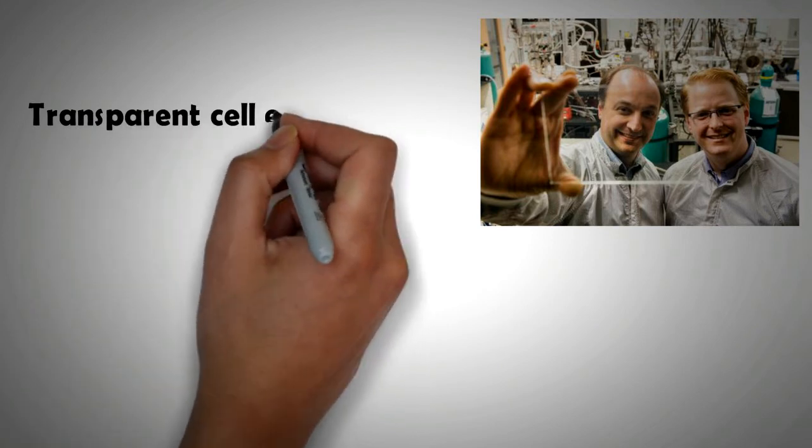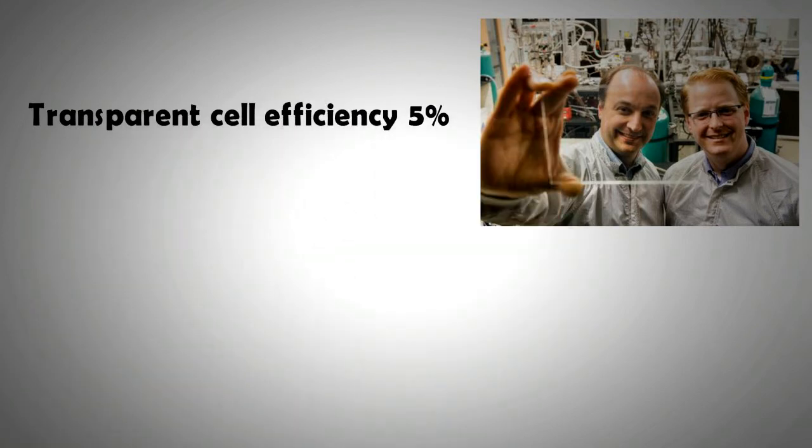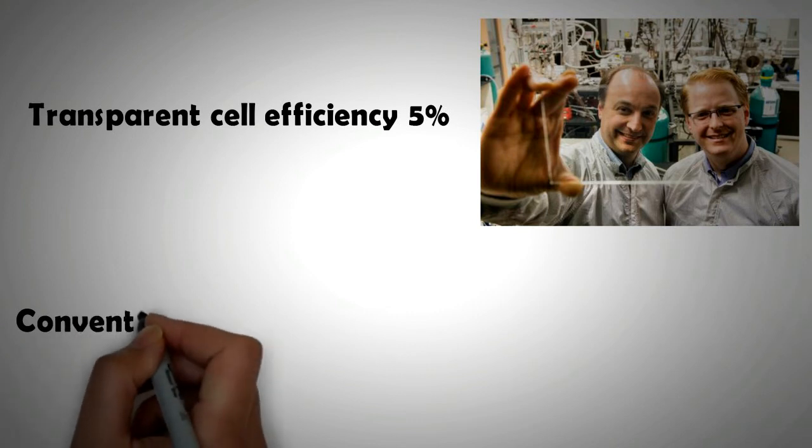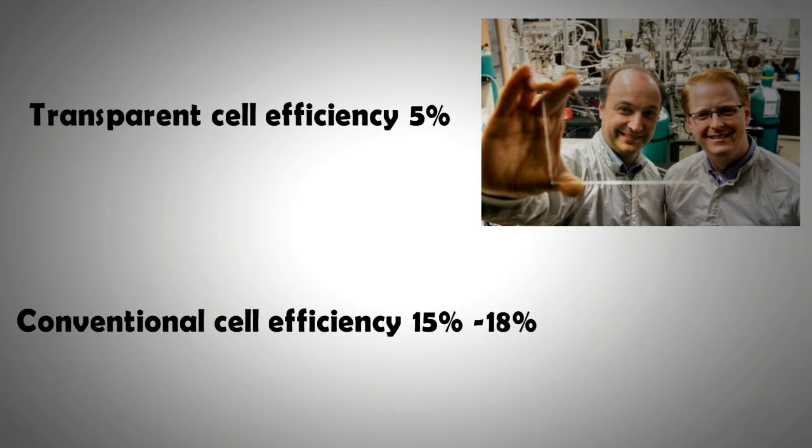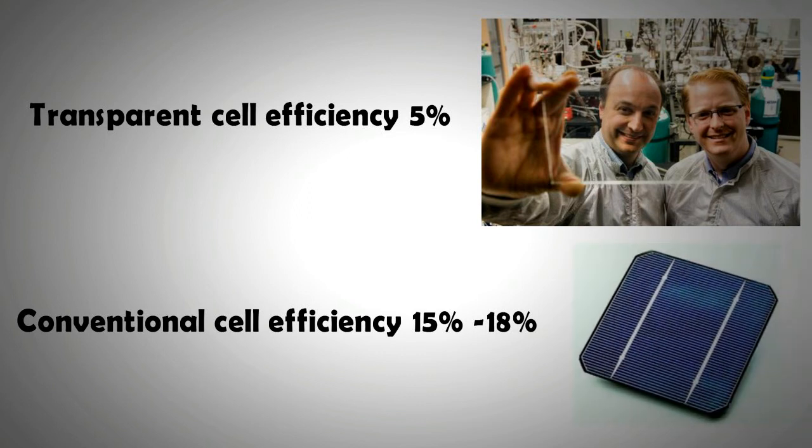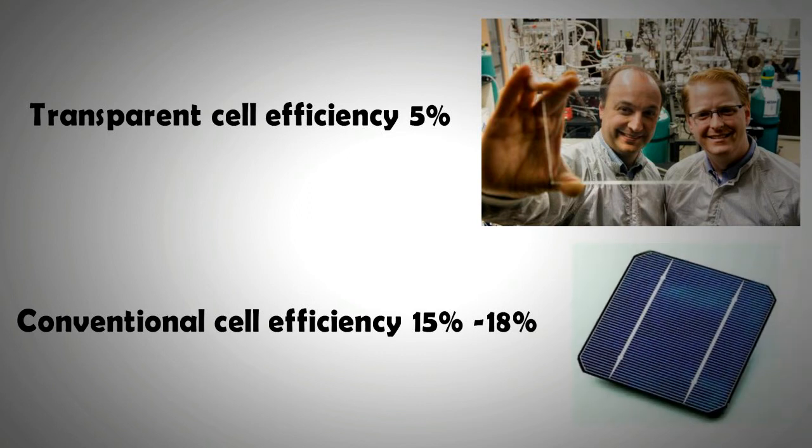These solar cells are made out of organic molecules. At present, they are only 5% efficient as compared to conventional panels that are 15 to 18% efficient. The reason is that the panels are doing away with the most powerful portion in the light spectrum that is visible light. So, in theory, for transparent solar panels, it will be very difficult to overcome conventional panels in terms of efficiency.